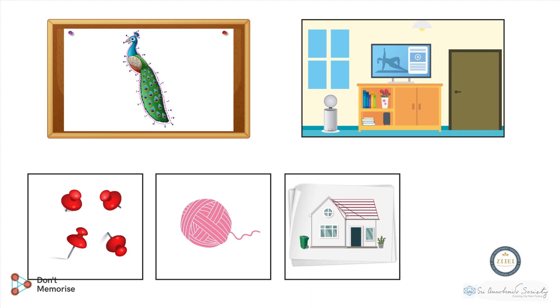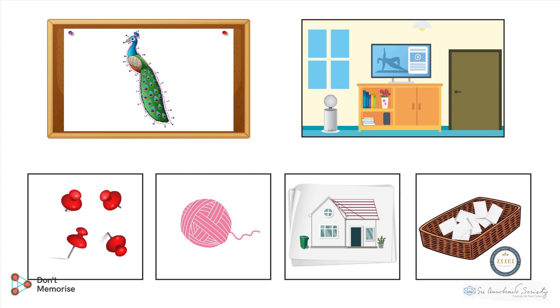Six drawing sheets having the outline structure of the house. Six sets of word chits with the words: roof, doors, windows, walls, floor, plants, and dustbin.